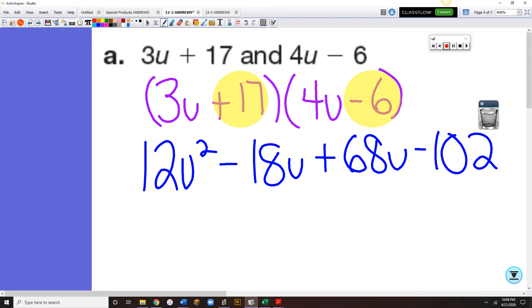Okay, as always, I've got to do my middle term. Okay, 12u squared stays the same. A minus 18u and a plus 68u is a plus 50u.